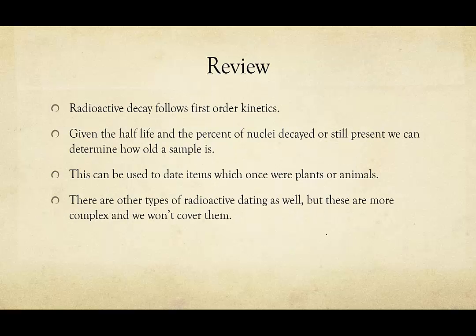In review: radioactive decay follows first-order kinetics, and all the rules and equations developed for first-order kinetics are valid for radioactive decay. Given the half-life and the percent of nuclei decayed — or the amount still present — we can tell how old a sample is. We can use this to date items that were once plants or animals using carbon-14, and we can also date rocks or extraterrestrial items using other types of radioactive decay that we won't go into in detail, but you should know it's possible.